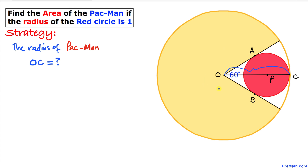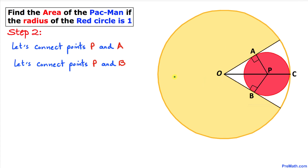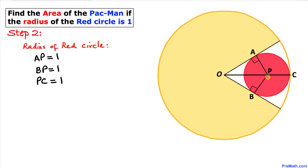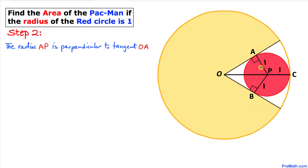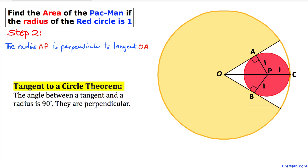In the next step, we connect points P and A, and likewise points P and B. We can observe that the radius of this red circle — AP — is one, as given. BP is one as well, and PC is one. Now, radius AP is perpendicular to tangent line OA according to the tangent-to-a-circle theorem: the angle between a tangent line and a radius is always 90 degrees.